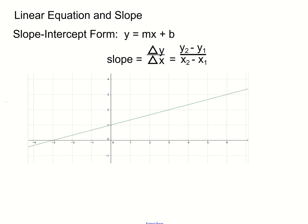To find the change in y — the vertical distance — you need to subtract the y-coordinates. To find the horizontal distance, you need to subtract the x-coordinates. You need to pick two points on that line, and between any two points you should be able to find a horizontal distance and a vertical distance — the change in x and change in y.